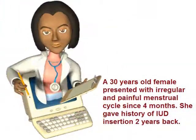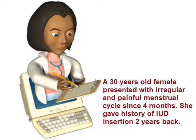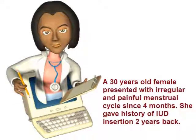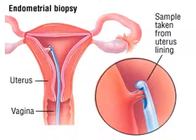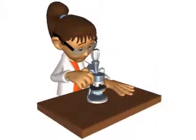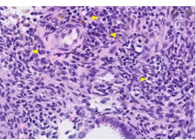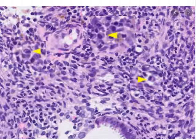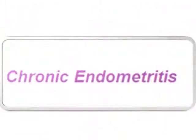Clinical scenario: a 30-year-old female presented with irregular and painful menstrual cycles since 4 months. She gave a history of intrauterine device insertion 2 years back. An endometrial biopsy was taken — a sample taken from the uterus lining. On histological examination of the biopsy, multiple plasma cells could be appreciated in the field, and a diagnosis of chronic endometritis was made.